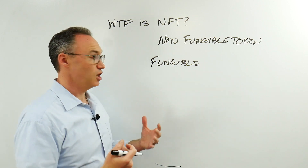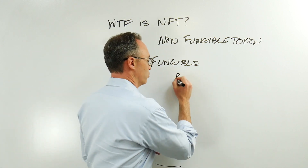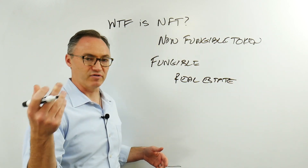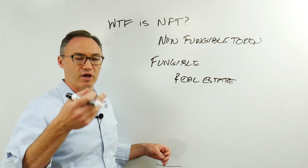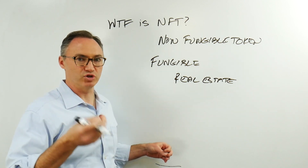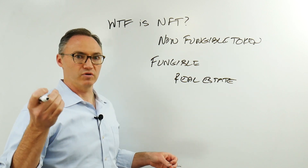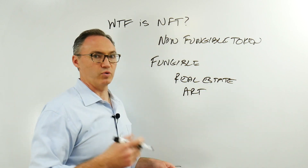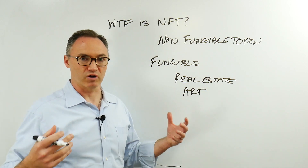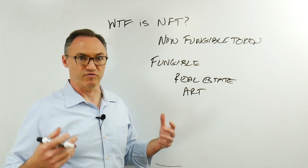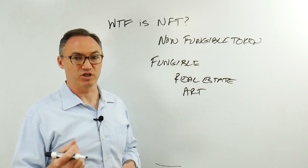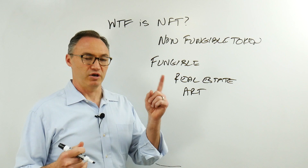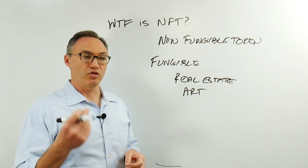Something that is non-fungible might be something like real estate. Your house is different than my house — different address, different layout, different everything. A home is not just square footage under a roof. Art is also non-fungible. There's only one work of art. Works of art are numbered, so there's only one number one of some certain series of art. Those are non-fungible.